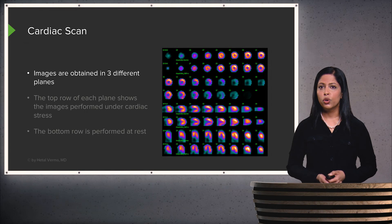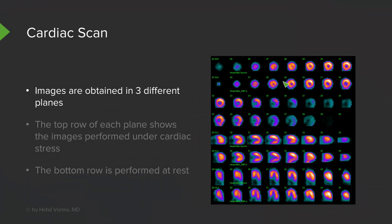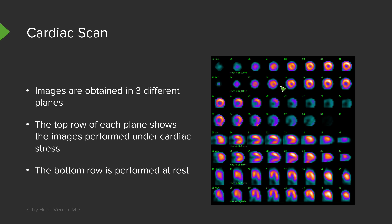This is an example of a normal cardiac scan. Images are obtained in three different planes: short axis, horizontal long axis, and vertical long axis. The top row of images shows the exam performed under cardiac stress, and the bottom row is performed at rest. So we have short axis stress, short axis rest, horizontal long axis stress, horizontal long axis rest, and vertical long axis stress and rest — and these are all compared.